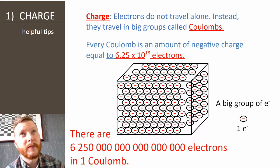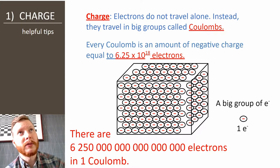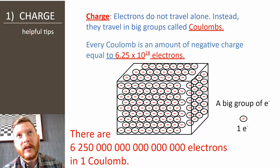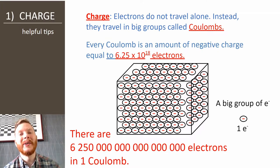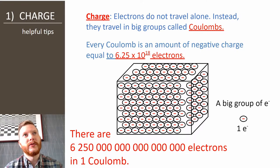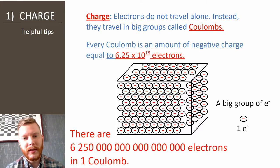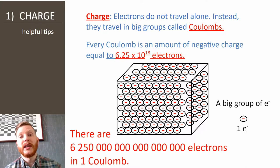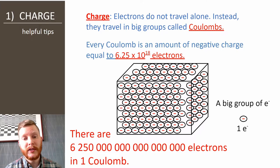Charge is the first thing. Electrons don't travel alone — they travel in a group we call a coulomb, named after the person who discovered it. A coulomb is 6.25 times 10 to the power of 18 electrons. There are so many electrons moving through a wire that we can't count them all, so we made a package and called it a coulomb. That's way easier to use.